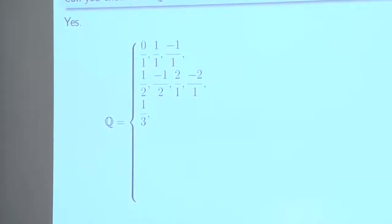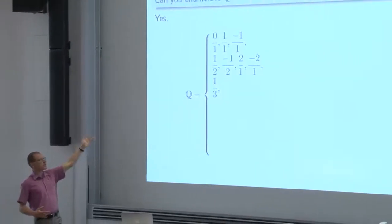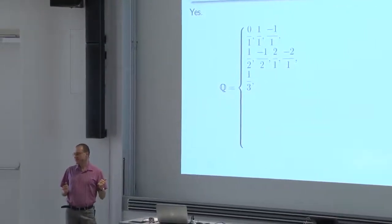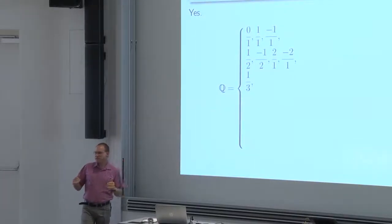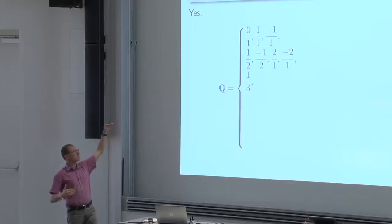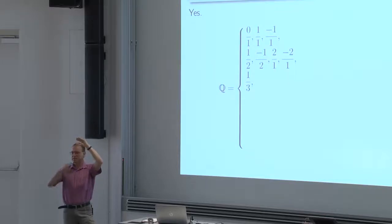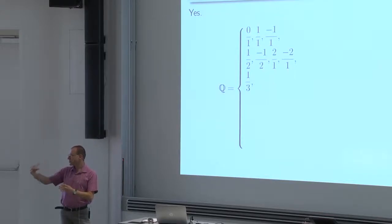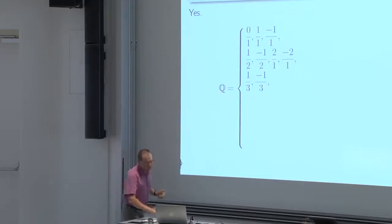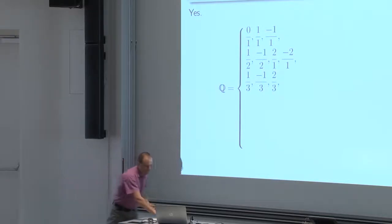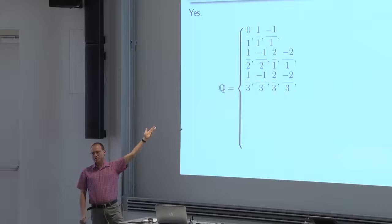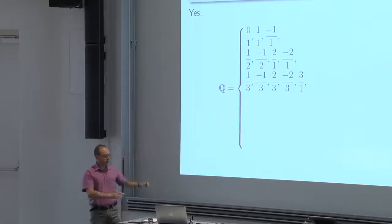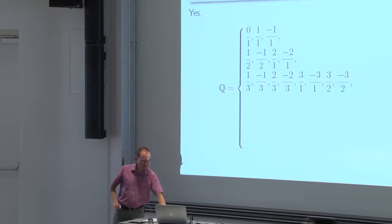Then we list all the rationals that also require, in addition to 0, 1, minus 1, 2, minus 2, also 3 or negative 3. We list the rational numbers by complexity — these are simpler rational numbers because they involve smaller numerators and denominators. Now we are getting to more complicated ones: 1 third, minus 1 third, 2 thirds, minus 2 thirds. 3 over 3 I don't have to put because it equals 1. Then 3 over 1, minus 3 over 1, 3 halves, minus 3 halves.